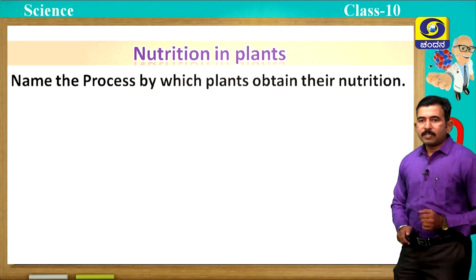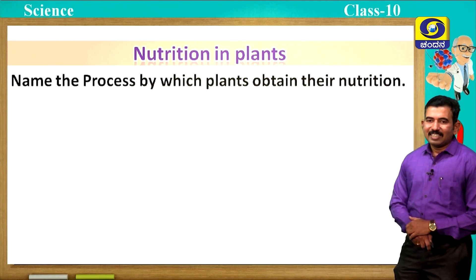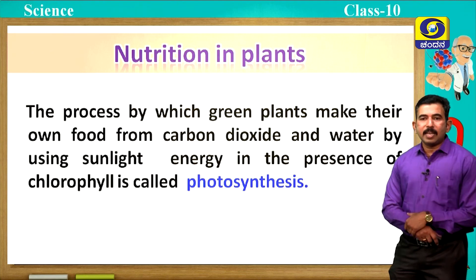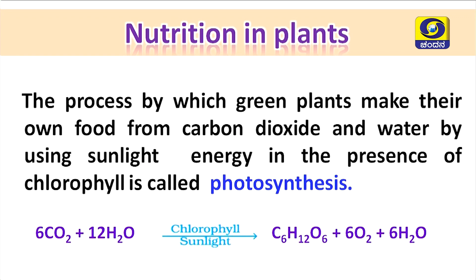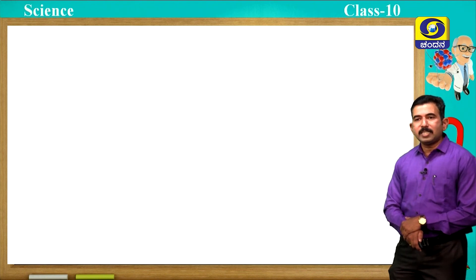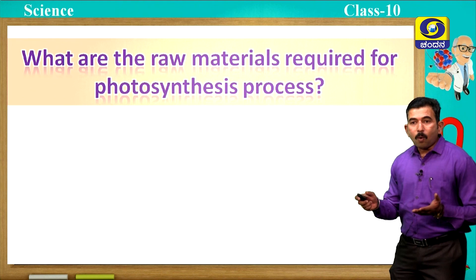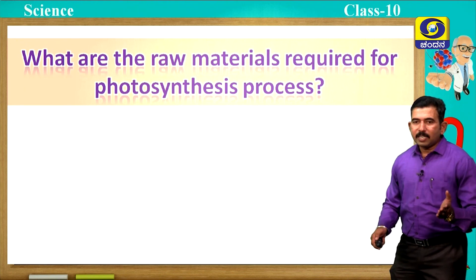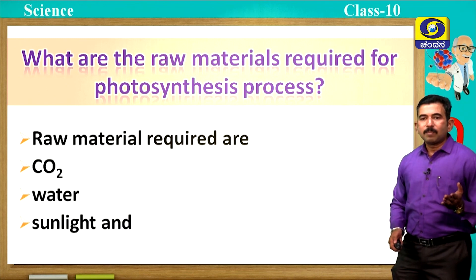Nutrition in plants — can you name the process by which plants obtain their nutrition, which you have studied in your lower classes? The process is photosynthesis. The process by which green plants make their own food from carbon dioxide and water by using sunlight energy in the presence of chlorophyll is called as photosynthesis. You can observe the equation. The raw materials required for photosynthesis are mainly carbon dioxide, water, sunlight, and chlorophyll.